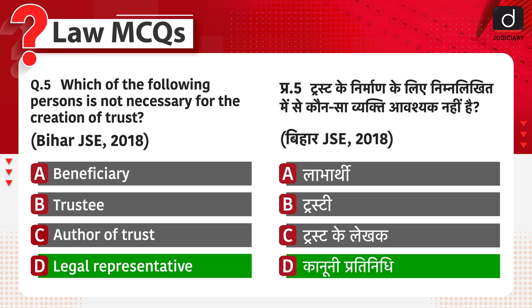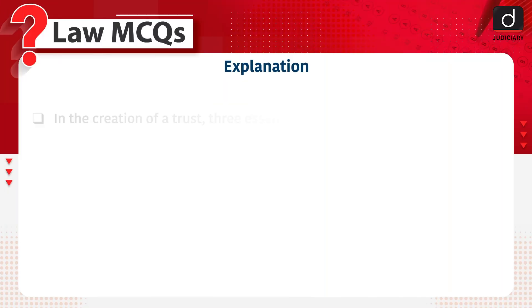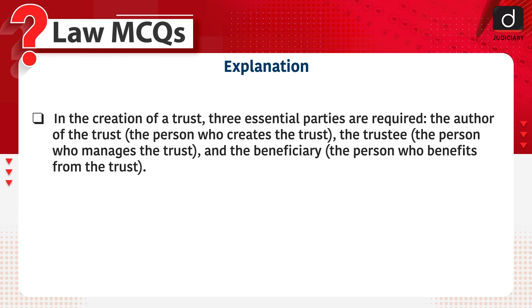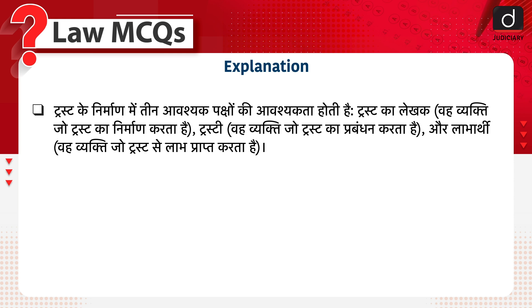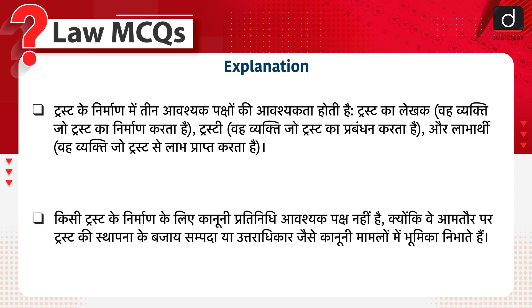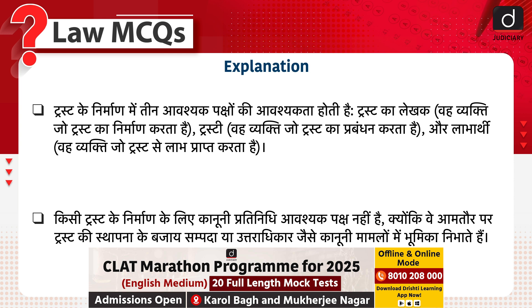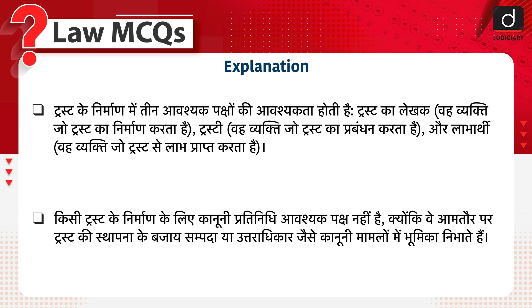The correct answer is option D, legal representative. इसका सही जवाब है Option D, कानूनी प्रतिनिधि। In the creation of a trust, three essential parties are required: the author of the trust (the person who creates the trust), the trustee (the person who manages the trust), and the beneficiary (the person who benefits from the trust). A legal representative is not a necessary party for the creation of a trust, as they typically come into play in legal matters like estates or inheritance, rather than in the establishment of a trust.